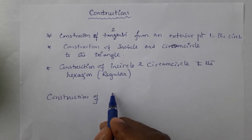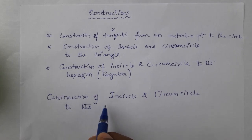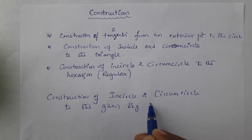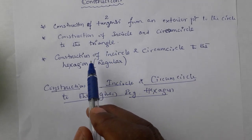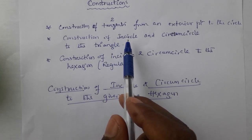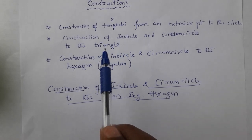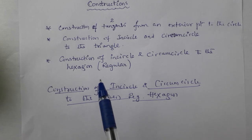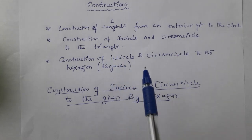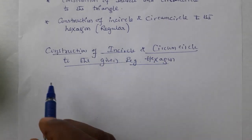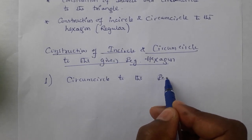Construction of incircle and circumcircle to the given regular hexagon. We have learnt incircle and circumcircle from the triangle construction. So in today's class, the incircle and circumcircle methods are the same as we followed in the triangle. The thing is how to construct the hexagon first — after the hexagon, the incircle and circumcircle methods are the same as in triangles.